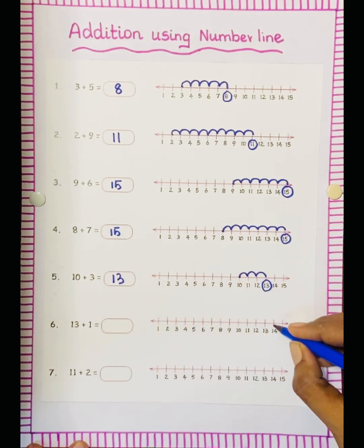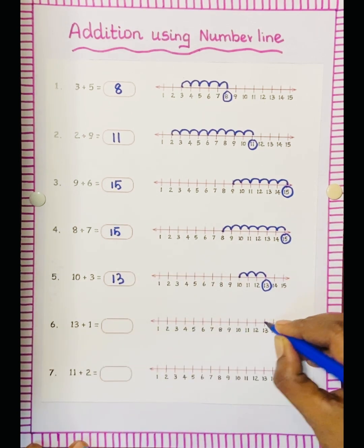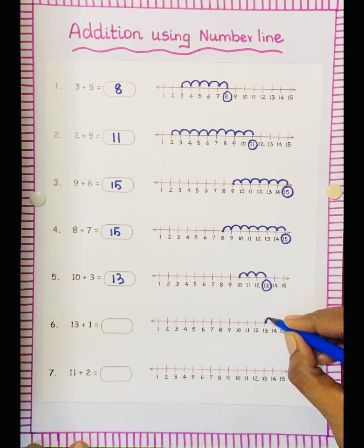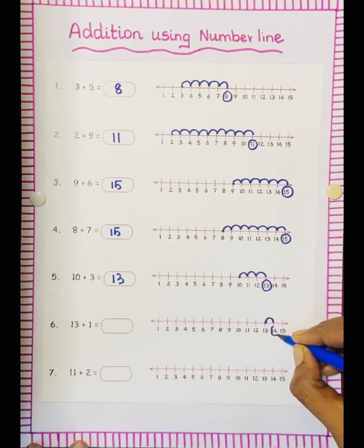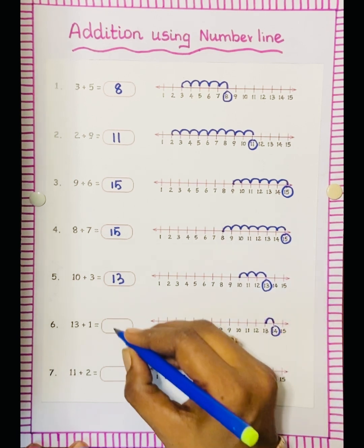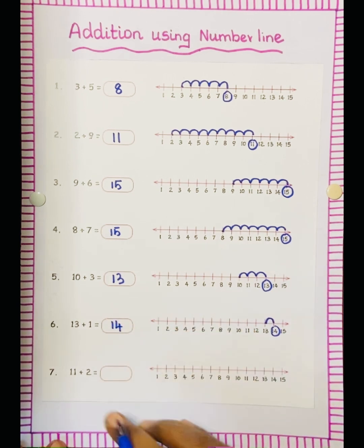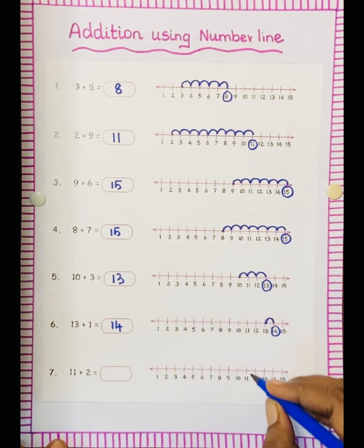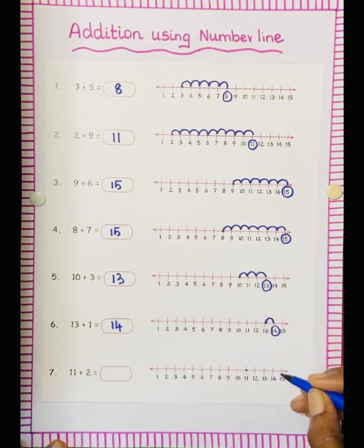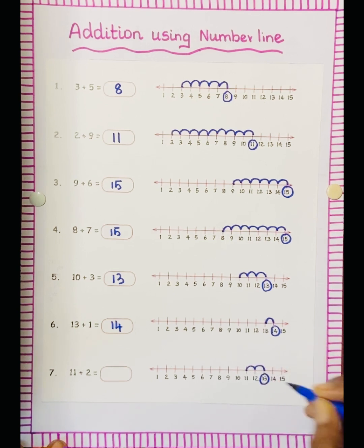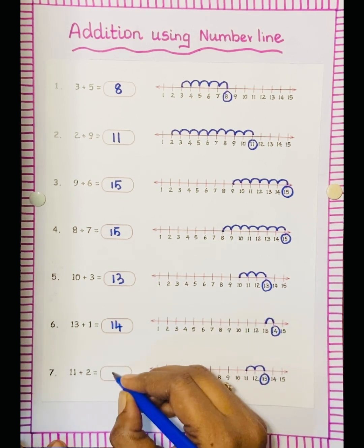13 plus 1. So keep the dot at 13, plus 1, make 1 jump. So the answer is 14. Next: 11 plus 2. So 11, make 2 jumps. So the answer is 13.